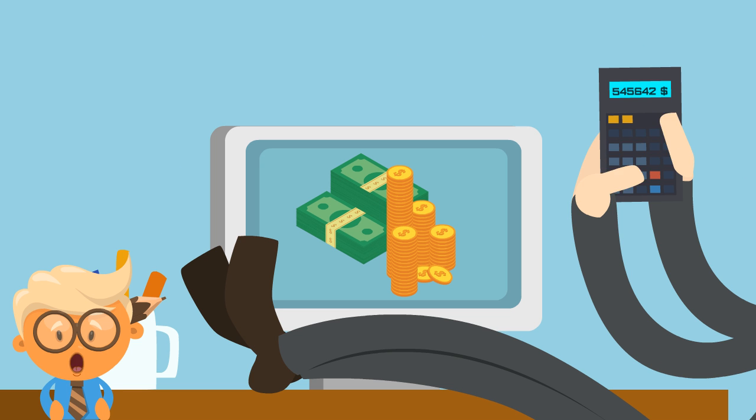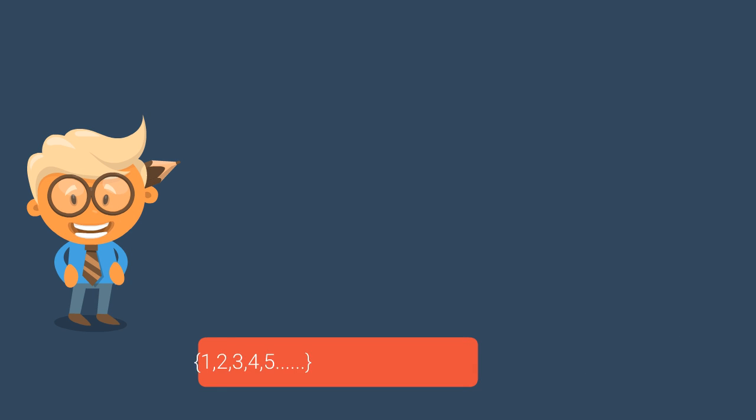Counting comes naturally, something that goes 1, 2, 3, 4 and so on. Hence, such numbers are grouped as natural numbers with the symbol N.